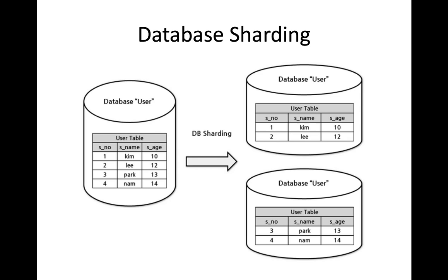Here's an example of sharding a relational database. I might have a database table called 'user' with four users in it. If I were to shard it, I'm splitting it into two databases, each with a user table — the first database has the first two records and the second has the third and fourth records. Imagine instead of four records, we have something like 400 million records, with a couple million records in each database, sharded across a dozen different database servers.